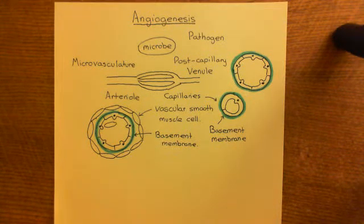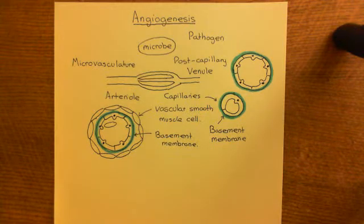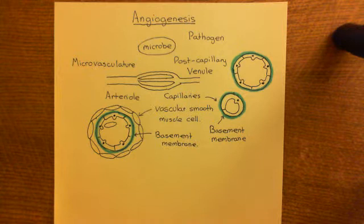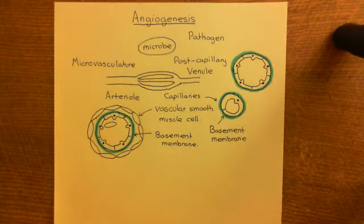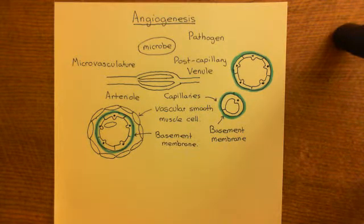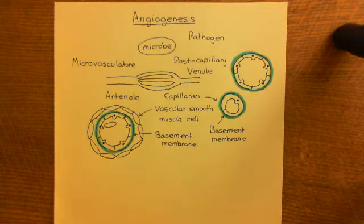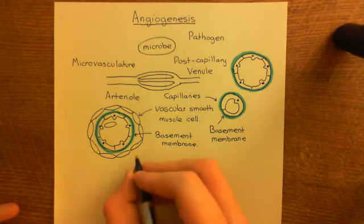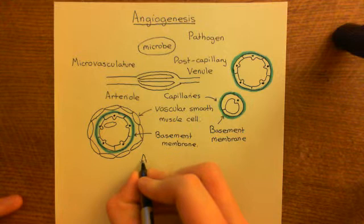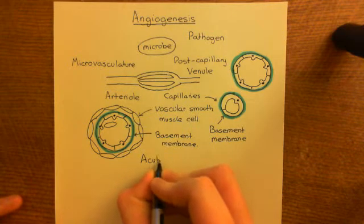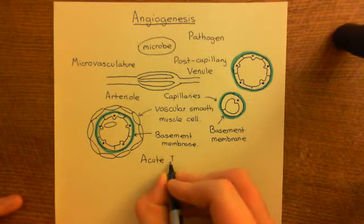Welcome to this next video in which we are discussing angiogenesis in chronic inflammation. We've just had a discussion of the three types of microvasculature blood vessel: the arterioles which lead to the capillaries, and then the venules. We're now about to discuss the acute inflammatory response, which is also called the innate immune response.